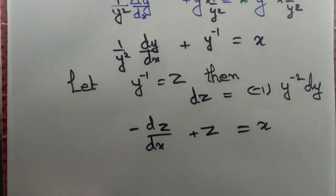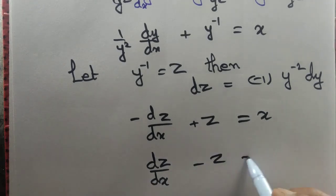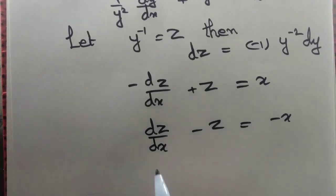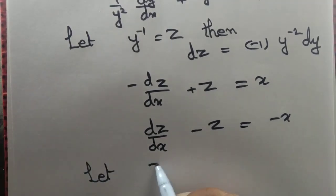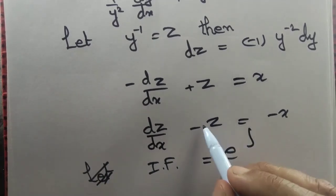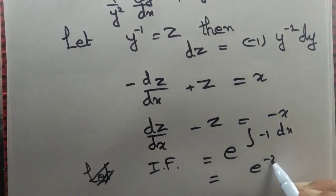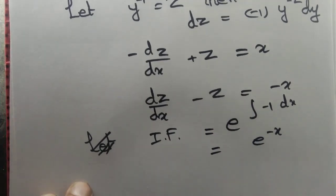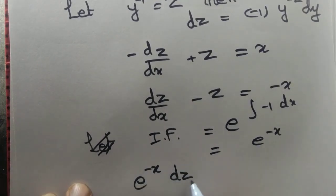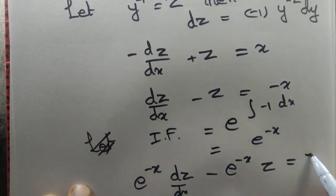Now it is a linear differential equation of first order — rather, let us multiply by -1 throughout. Now it is a linear differential equation of first order. The integrating factor IF = e^(∫-1 dx) = e^(-x). We multiply by the integrating factor throughout: e^(-x) dz/dx - e^(-x) · z = -e^(-x) · x.